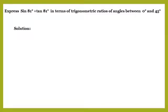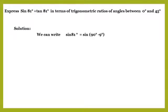Solution: we can write sin 81 degrees as sin(90 degrees minus 9 degrees), because 90 minus 9 equals 81 degrees. But from trigonometric ratios of complementary angles, sin(90 degrees minus 9 degrees) is equal to cos 9 degrees.